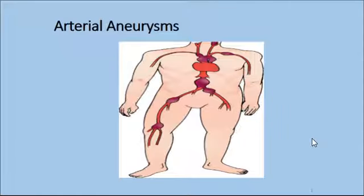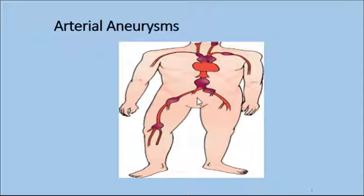We're going to pick up on arterial aneurysms, part 2 of chapter 36 on page 726. This picture shows you the most common places where arterial aneurysms occur. As you can see, it can happen up in the upper body, not just the lower. It can happen in any artery, but these are the most common.